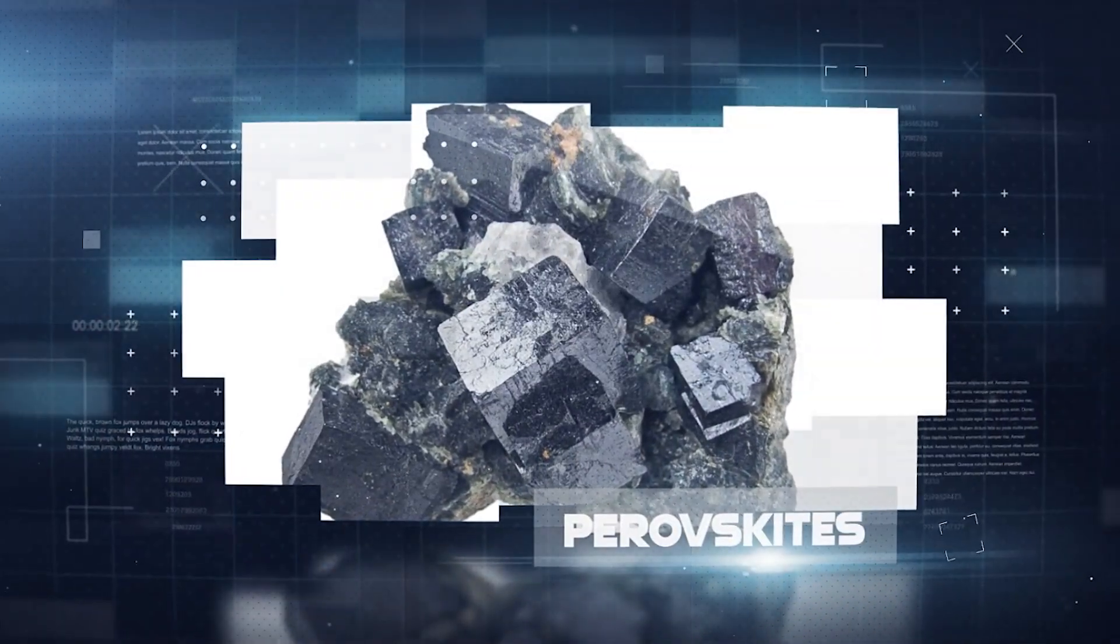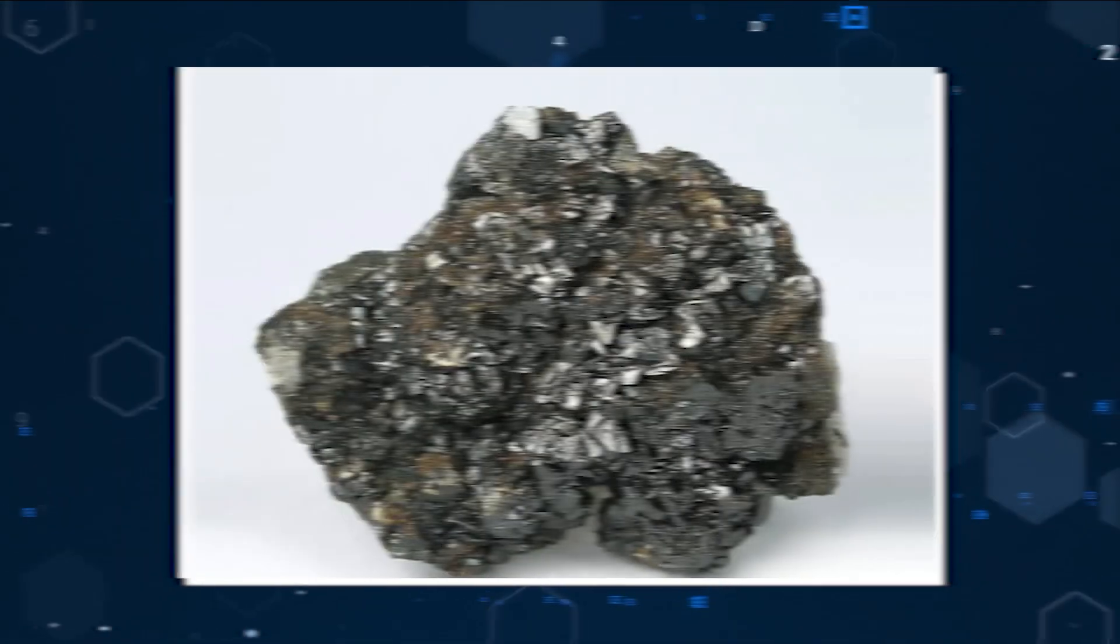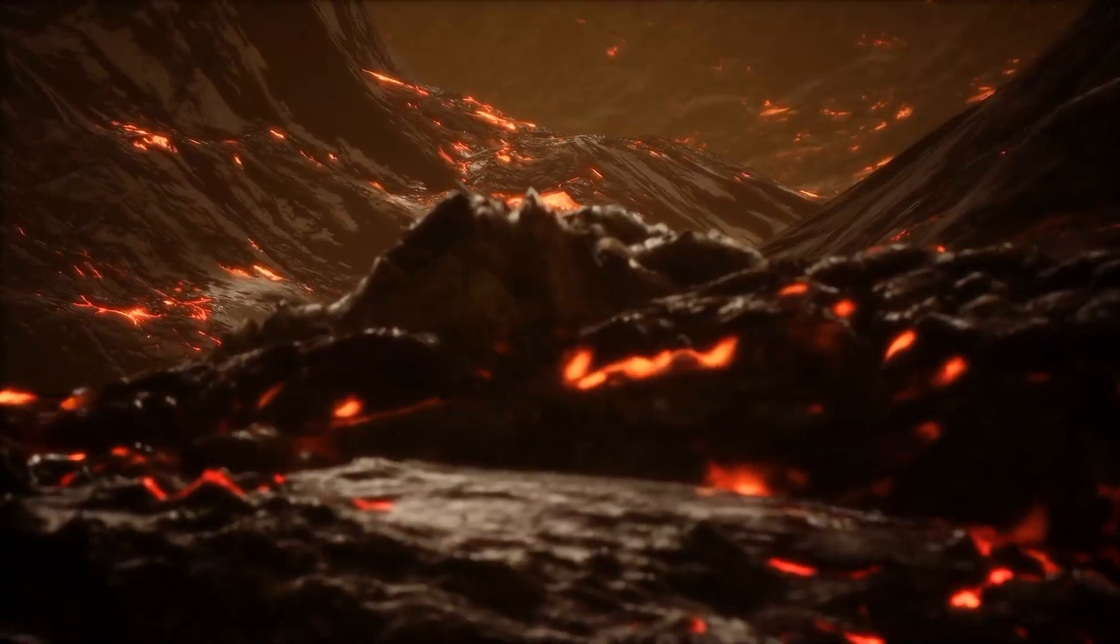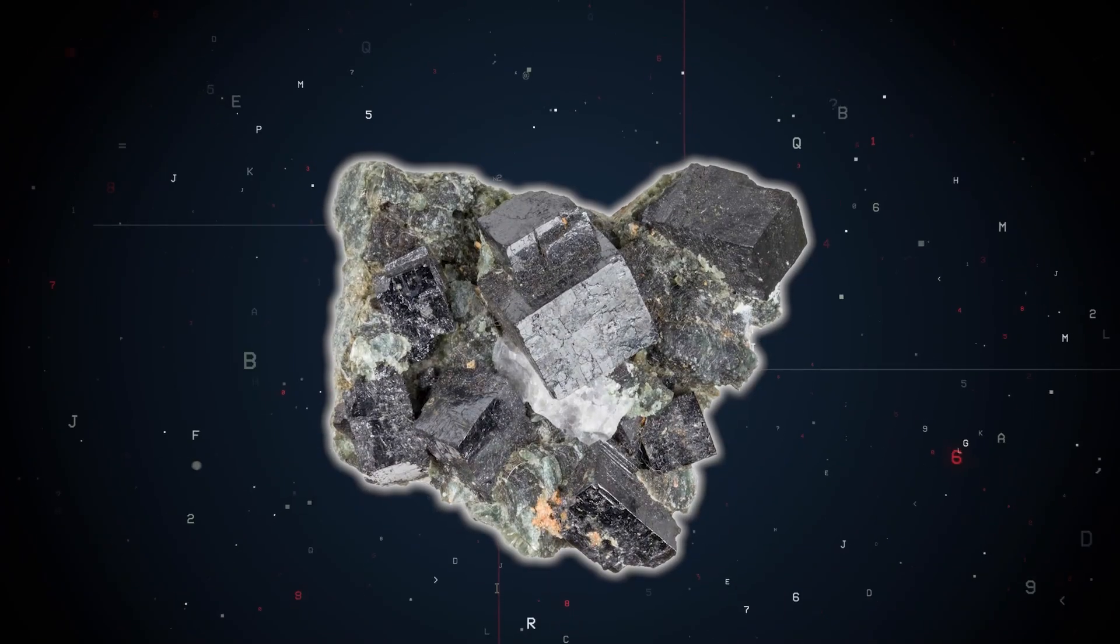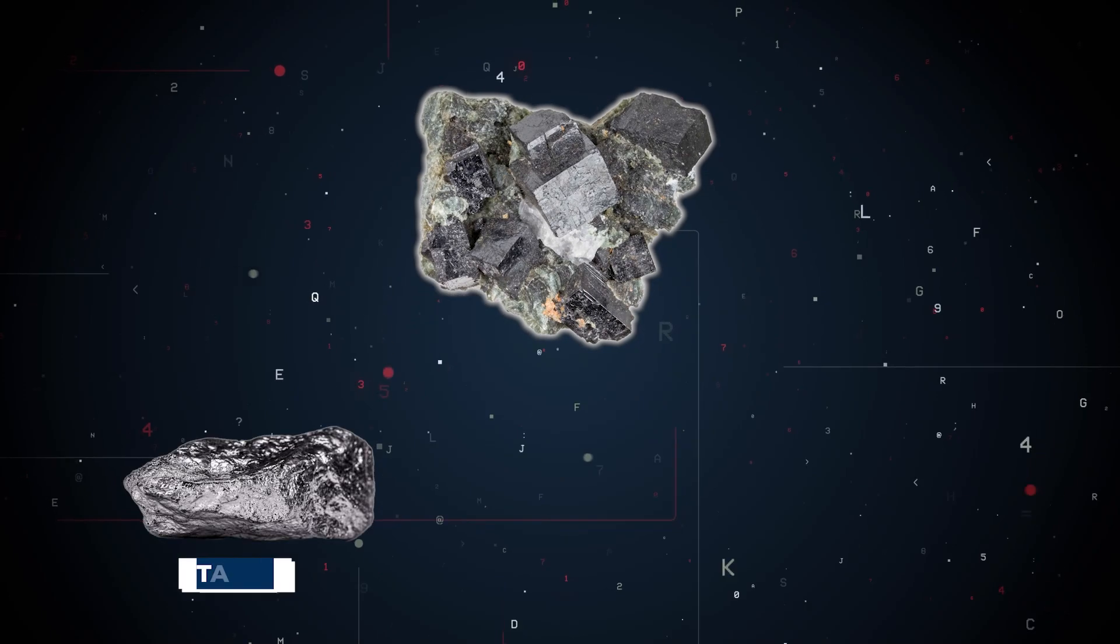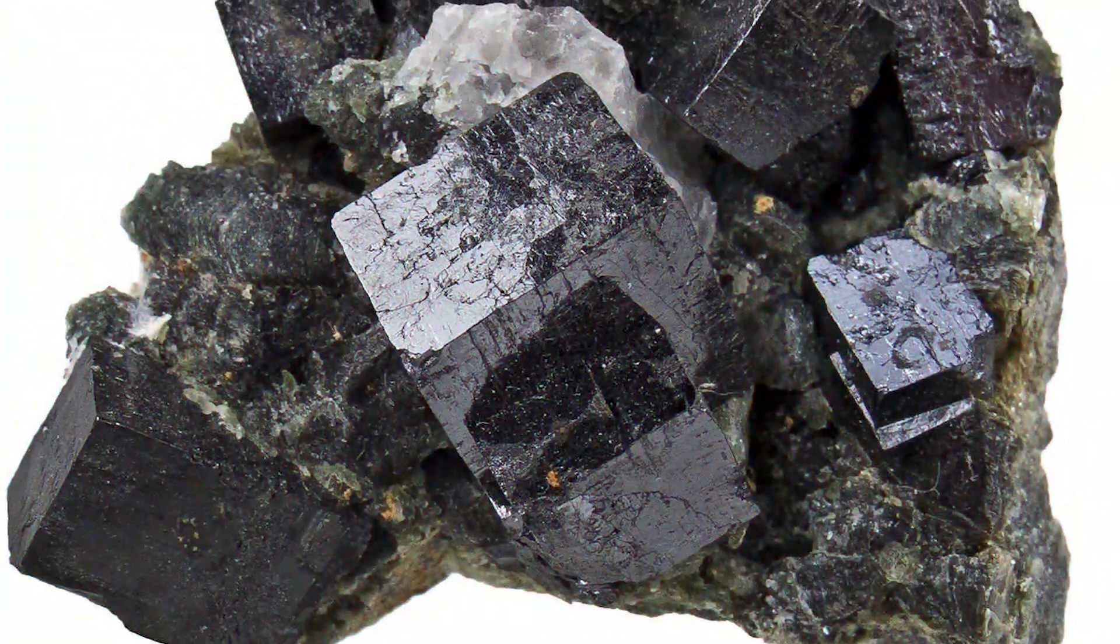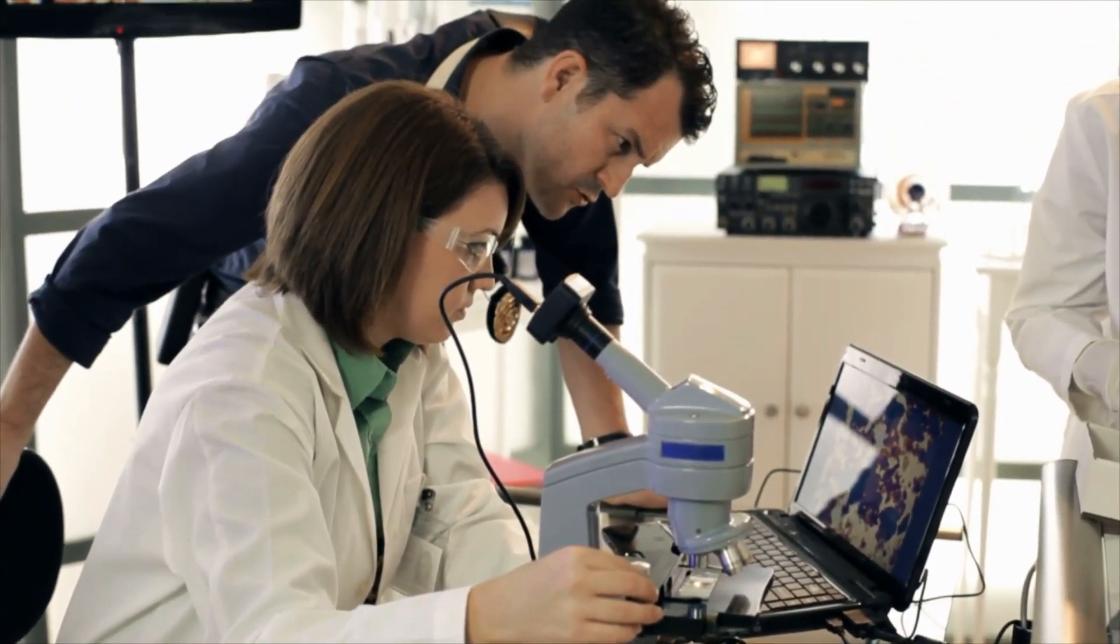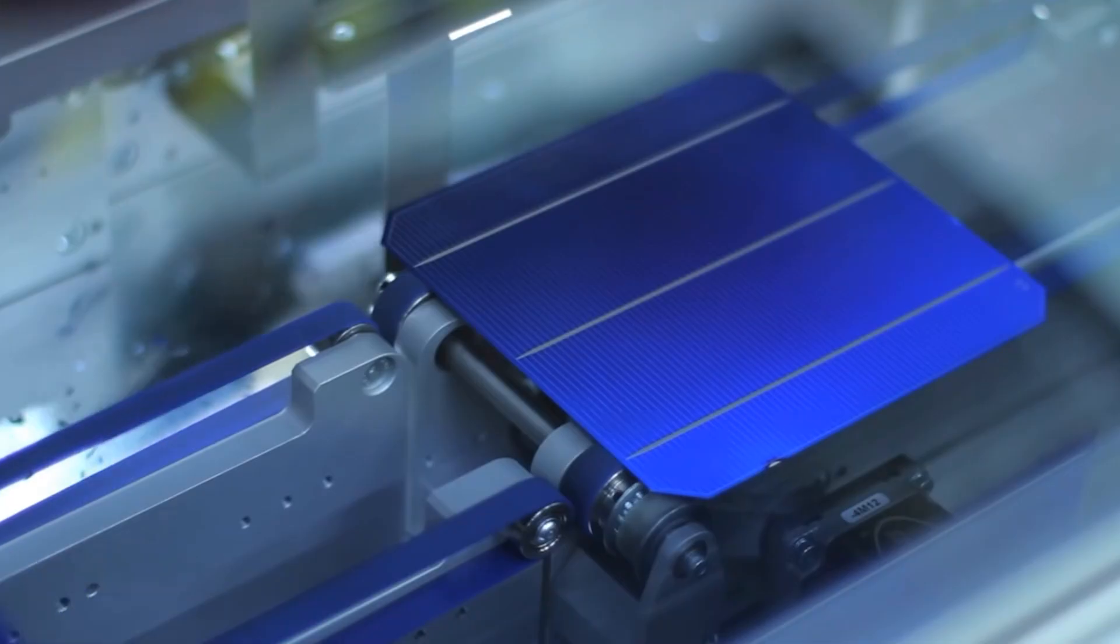Perovskites are minerals found in the mantle of the Earth. The minerals were first discovered by Russian mineralogist Gustav Rose decades ago. And up until a few years ago, perovskite seemed to have no value. It was just lying there, untouched and unutilized. The mineral is made up of a combination of titanium, calcium, and oxygen in a crystal structure. From the looks of it, perovskite is a simple compound. But when researchers dug deeper into its properties, they found impressive qualities that could replace the silicon in solar cells.